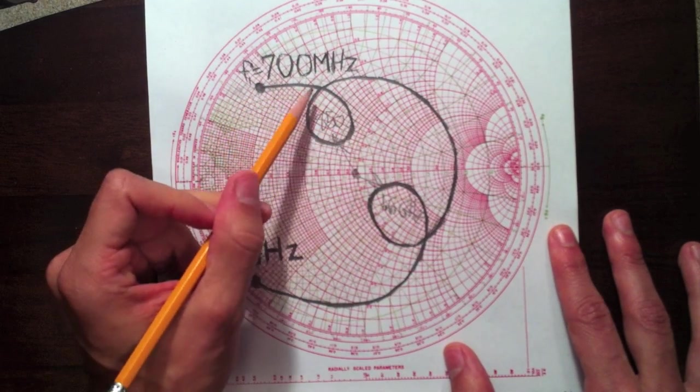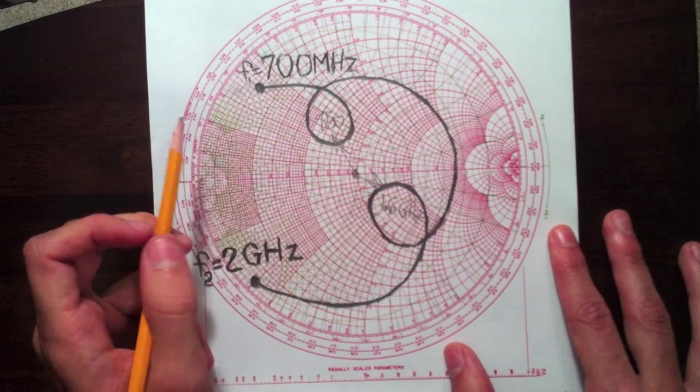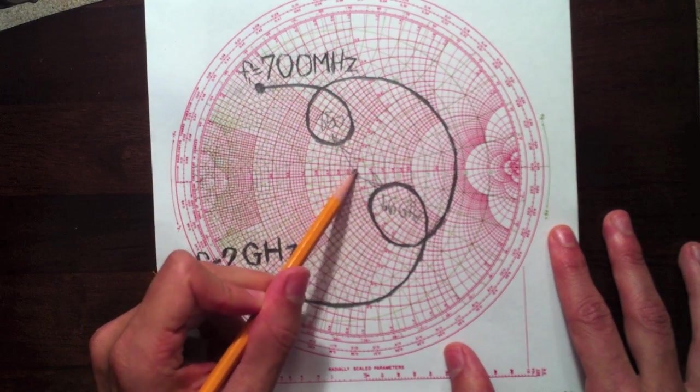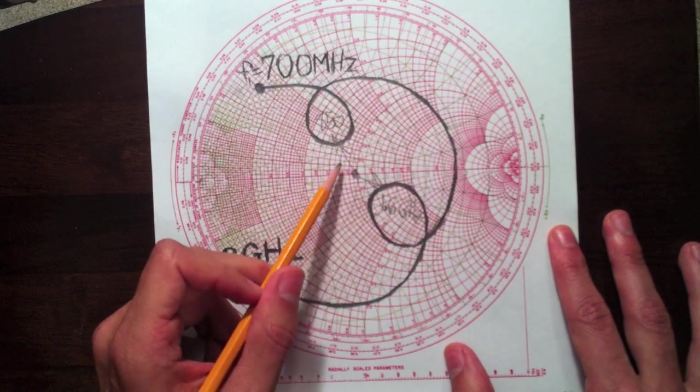So by looking at this, we can kind of see how the antenna is performing over frequency. And remember, the farther the antenna impedance is from the center of the Smith chart, the more power is reflected.